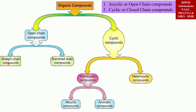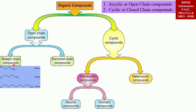In straight chain compounds, the carbon atoms are attached with each other to form a straight chain. Examples include butane, pentane, nonane, etc. In branched chain compounds, the carbon atoms are attached with each other and also form some branches. One example is 4-methylpent-2-ene, etc.